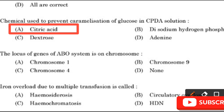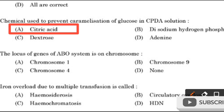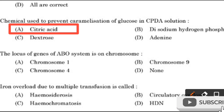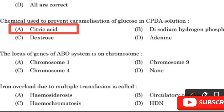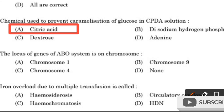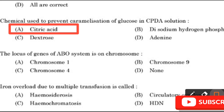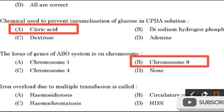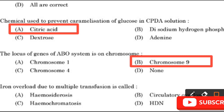Question number 12: The locus of genes of the ABO system is on which chromosome — Chromosome 1, Chromosome 9, Chromosome 4, or None? The locus of the ABO gene is located on chromosome 9. The right answer is chromosome 9.